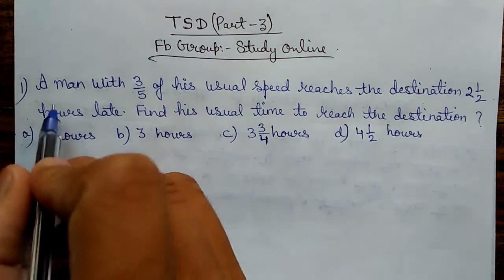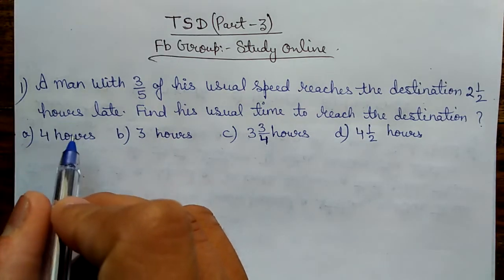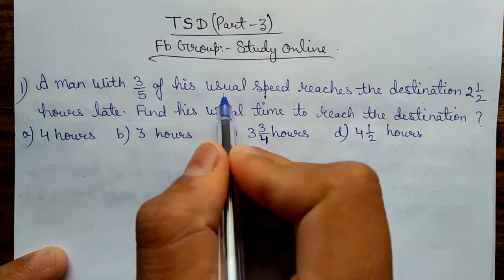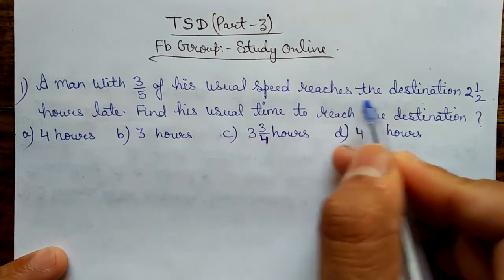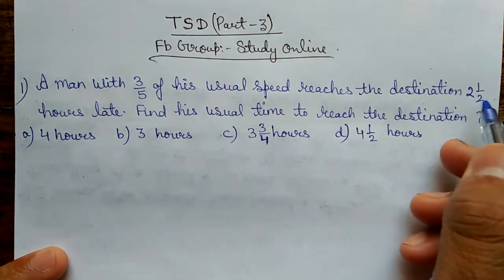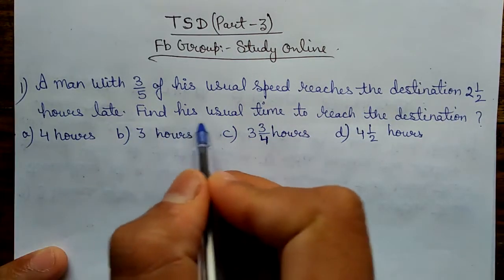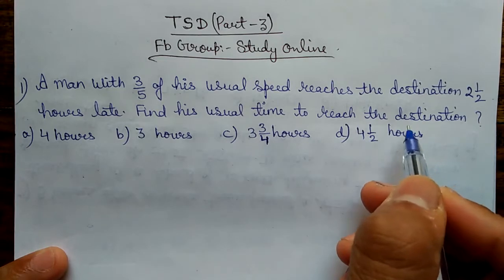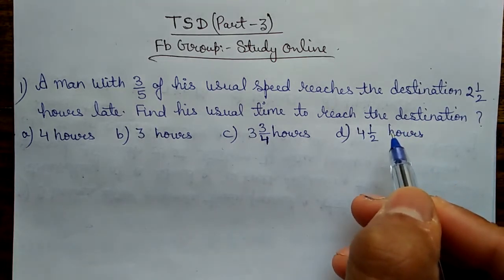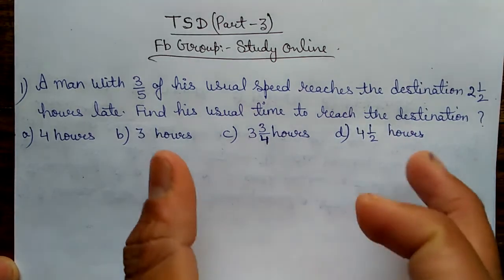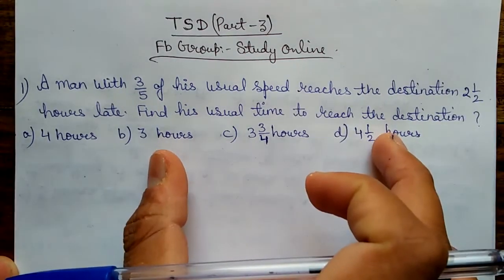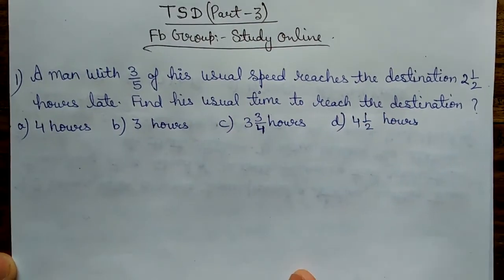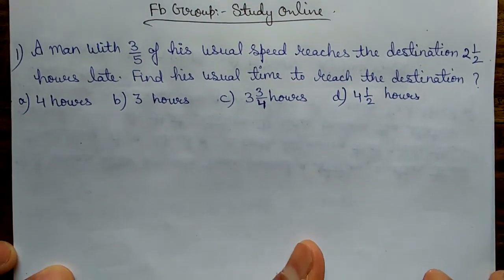Now let's start with the very first question. A man with 3/5 of his usual speed reaches the destination 2.5 hours late. Find his usual time to reach the destination. We will solve this question by 2 methods — first by method, then by trick. Whatever you like, you can use that method.